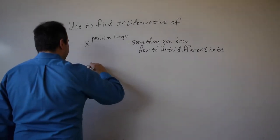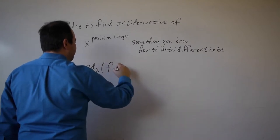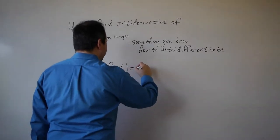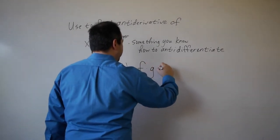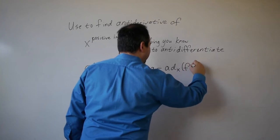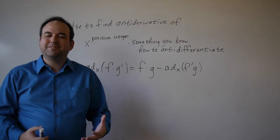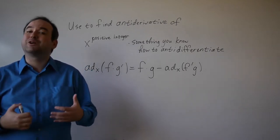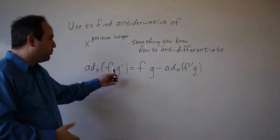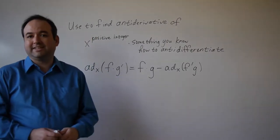The formula is pretty simple. It says that the anti-derivative with respect to x of some function times the derivative of another function equals f times g minus the anti-derivative with respect to x of f prime g. Integration by parts is an example of a transformation type equality — we're transforming one anti-derivative into a problem involving another anti-derivative.